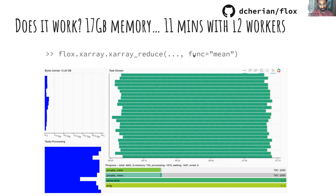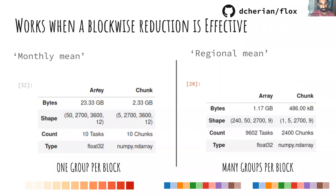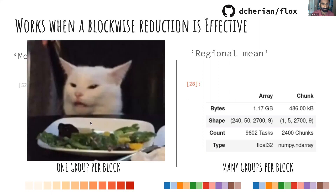For the regional binning problem — grouping by spatial patterns — it finishes in 10 to 11 minutes with 12 workers, using at most 17 gigabytes of memory for a half-terabyte dataset. Suddenly this dataset is analyzable on a laptop if you had a big enough one — which is kind of ridiculous. So xarray handles the first group-by well, the second it doesn't, and map-reduce fixes the second — but then I tried it on the first one and it fails completely.